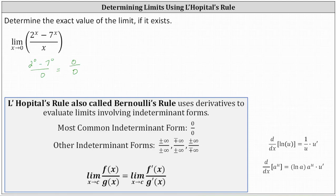L'Hôpital's rule, also called Bernoulli's rule, uses derivatives to evaluate limits involving indeterminate forms. In our case, we have the most common indeterminate form of zero divided by zero. L'Hôpital's rule states the limit as x approaches c of f(x) divided by g(x) equals the limit as x approaches c of f′(x) divided by g′(x).